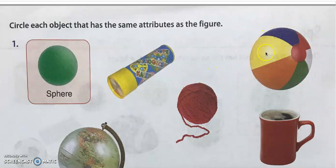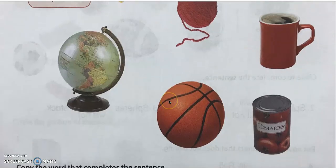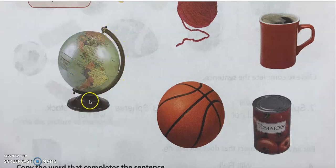Beach ball — only curved surfaces, go ahead and circle. Basketball — only curved surfaces, circle it. What about the mug? It has curved surfaces but also flat surfaces, so it's not a sphere. Canned tomatoes — both curved and flat surfaces, not a sphere. The globe itself is completely in the shape of a sphere — only curved surfaces — so let's go ahead and circle it.